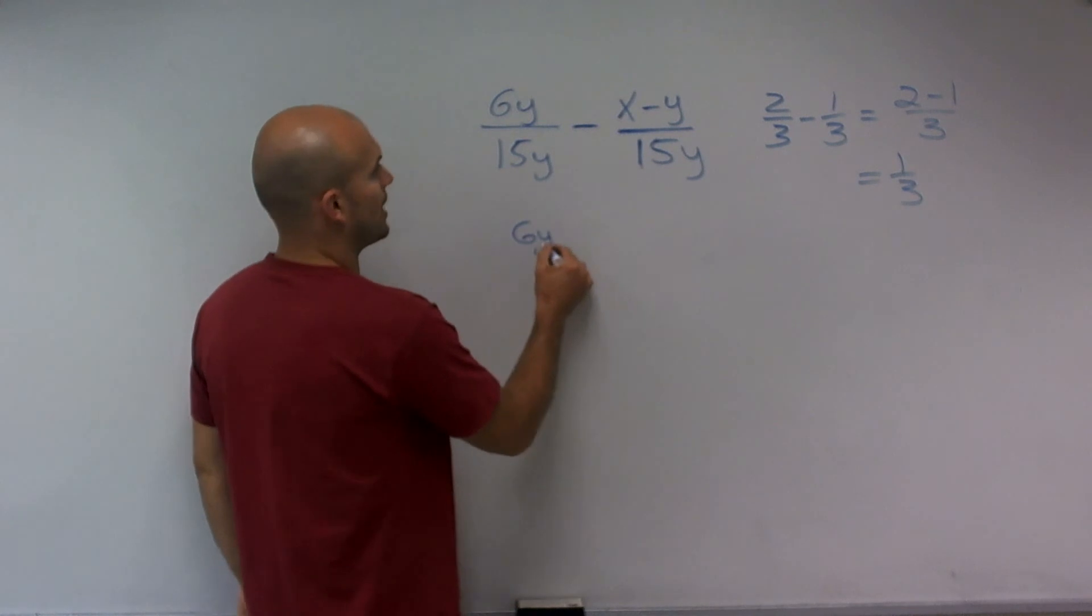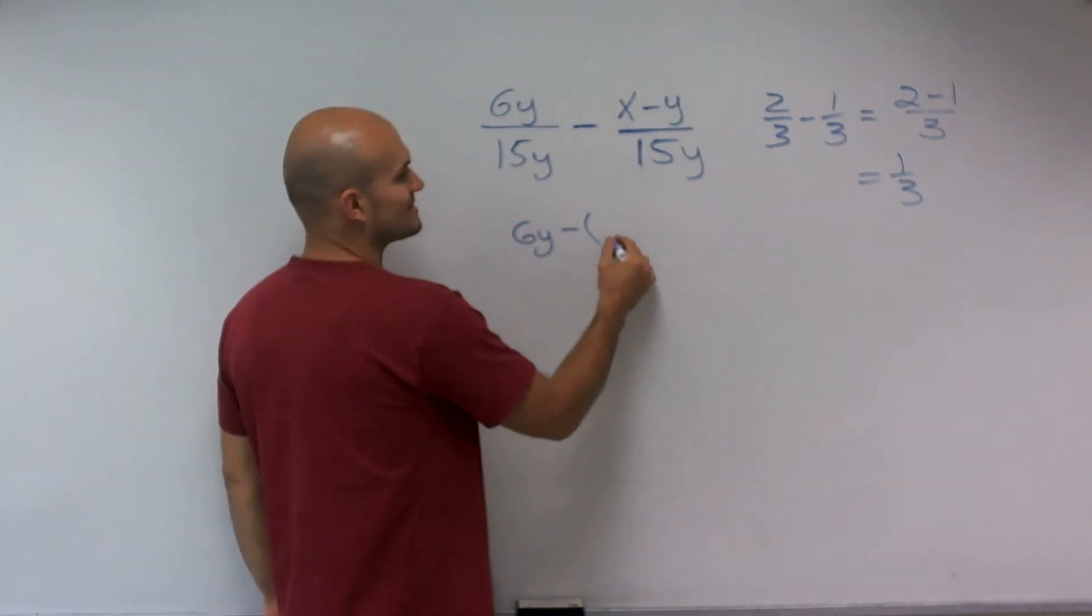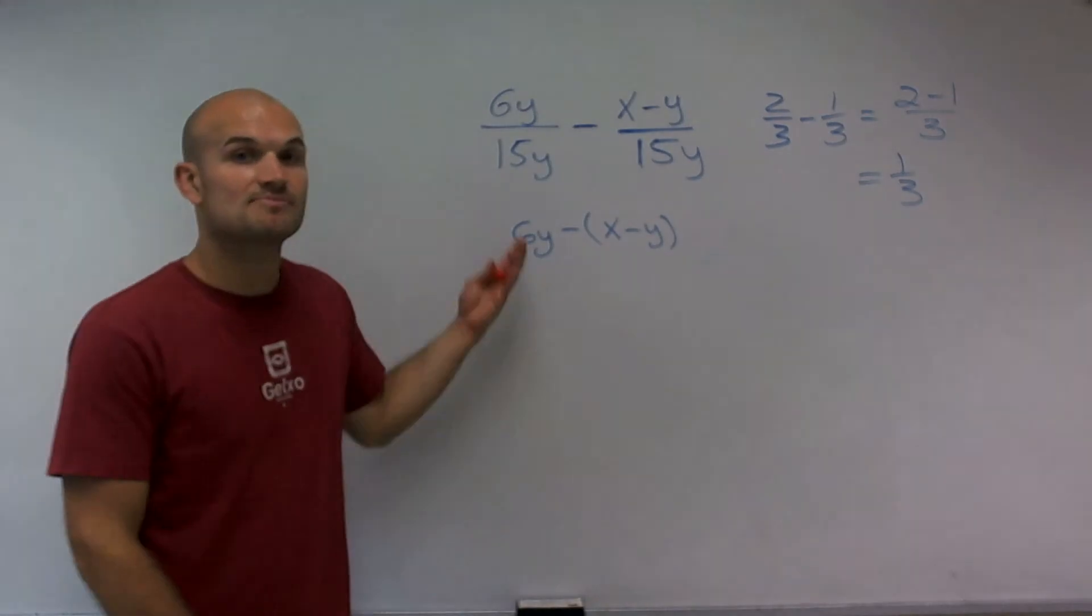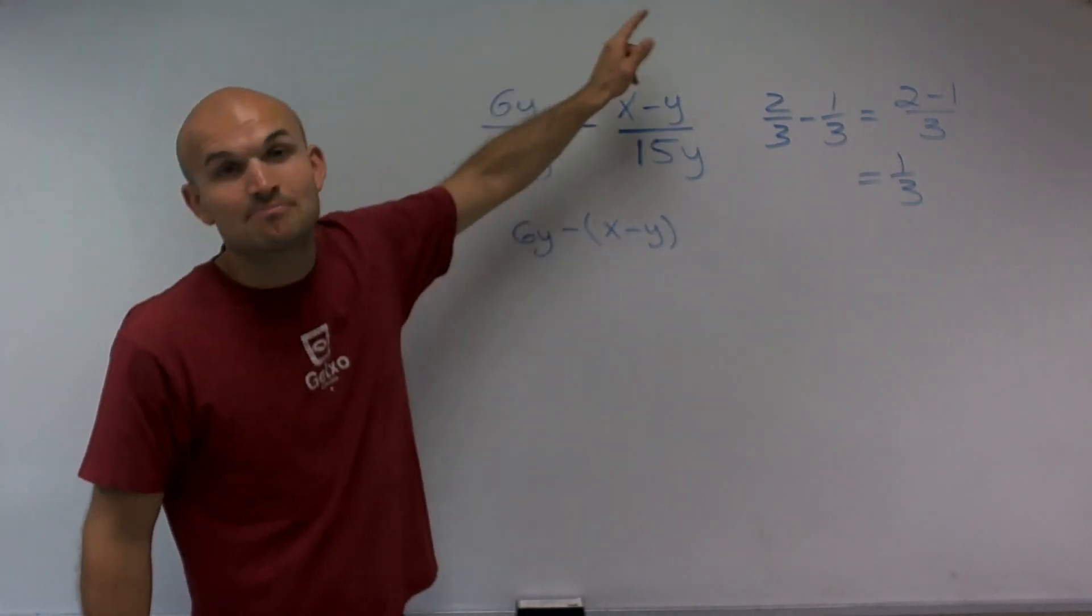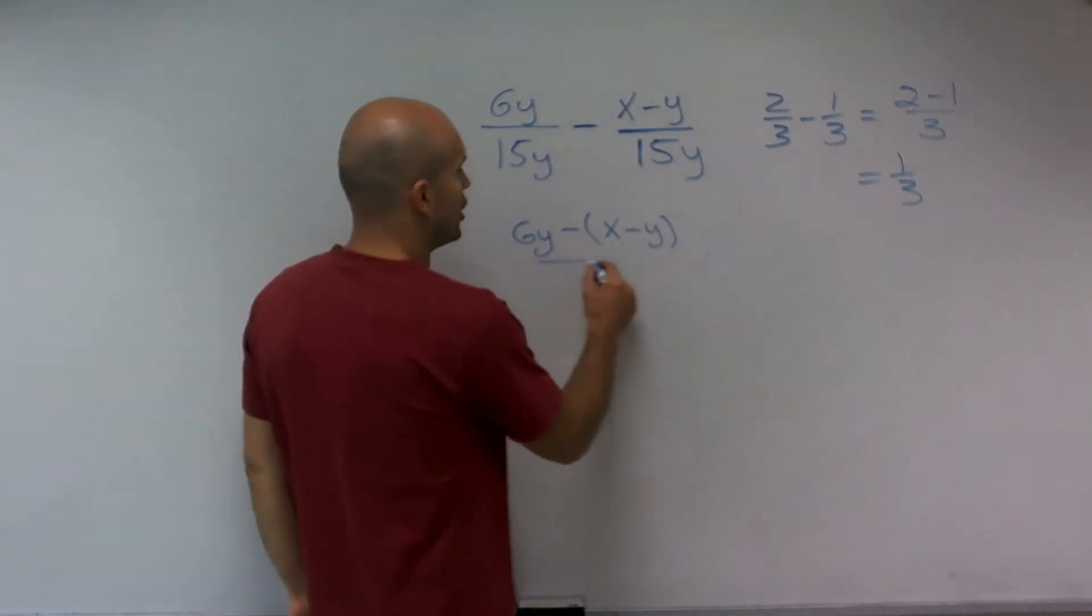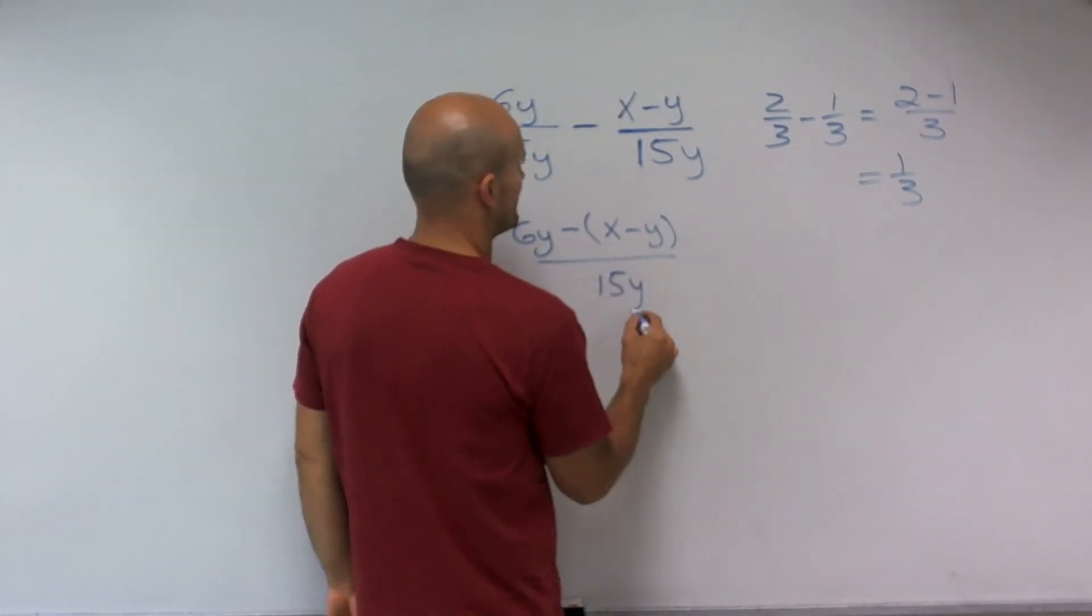I'm going to do 6y minus, in parentheses, x minus y, all right? Because be careful, remember you're not subtracting x, you're subtracting x minus y. And that's all over 15y.